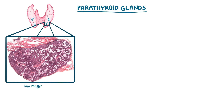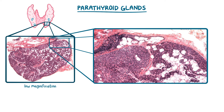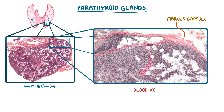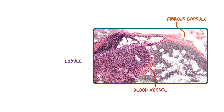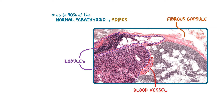Moving on to the parathyroid glands. This low magnification image shows how different the tissue looks even at first glance. The parathyroid does have its own thin fibrous capsule that also extends inward, carrying nerves, lymphatics, and blood vessels, although the nerves and lymphatics are not easily seen in this image. The fibrous connective tissue in the parathyroid also forms irregular lobules, and up to 40% of the normal parathyroid gland tissue is composed of adipose tissue.